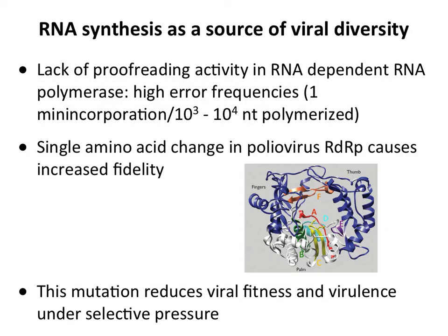The last bit today is about making mistakes and how that drives viral diversity. RNA synthesis — all nucleic acid synthesis — is error prone. The problem with RNA-based RNA synthesis is you can't correct your errors. DNA polymerases have proofreading mechanisms, but RNA-dependent RNA polymerases do not. As a consequence, they make one mistake per 1,000 or 10,000 nucleotides incorporated.